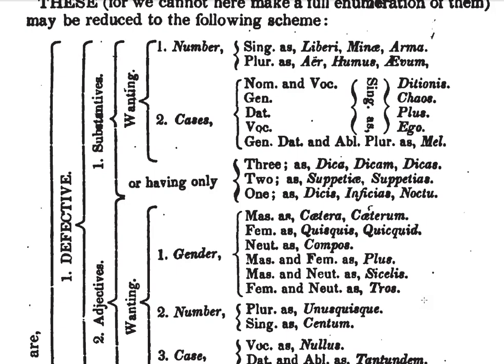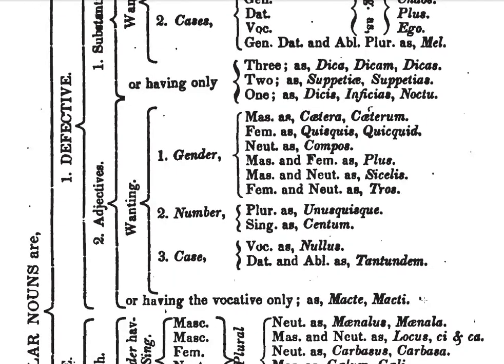Then we have adjectives. Those lacking gender — number one: masculine, as in caetera and caeterum; or feminine, as in quisquis and quidquid; and neuter, as in compos. Then we have masculine and feminine, as in plus; masculine and neuter, as in sicilis; and feminine and neuter, as in thros.